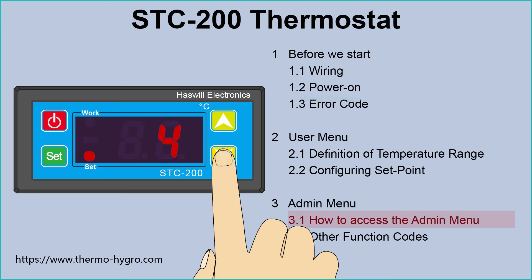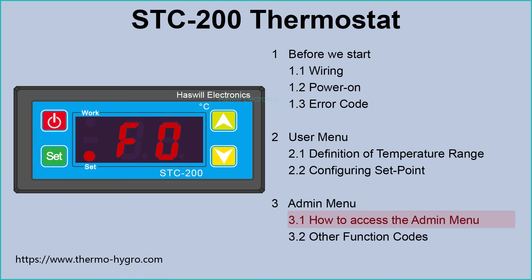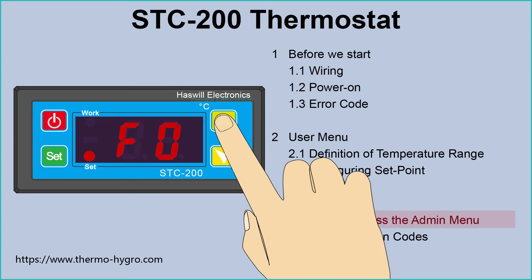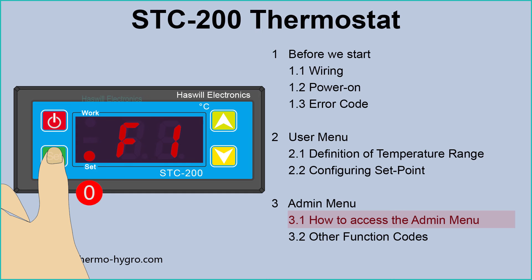Step 2: press the up or down key to change the value. Step 3: press the set key to save the new data and go back to the code menu list. Step 4: press the up or down key to navigate to other function codes. Repeat the above steps to adjust other parameters. At last, hold the set key for 3 seconds to save data and return to the normal state.